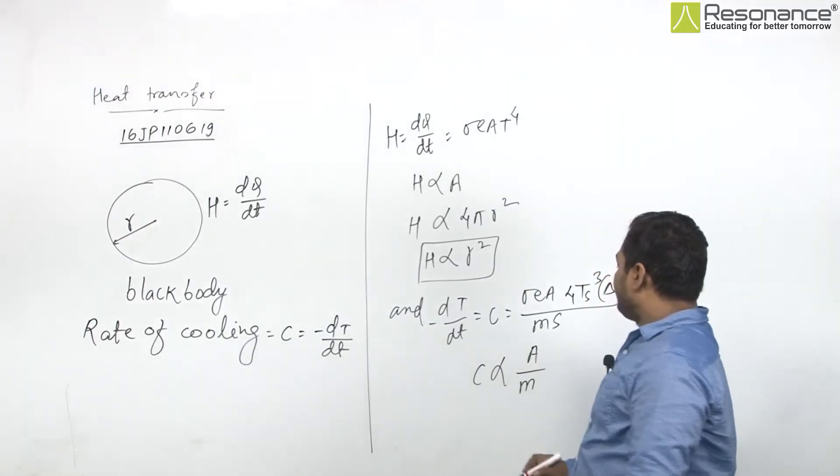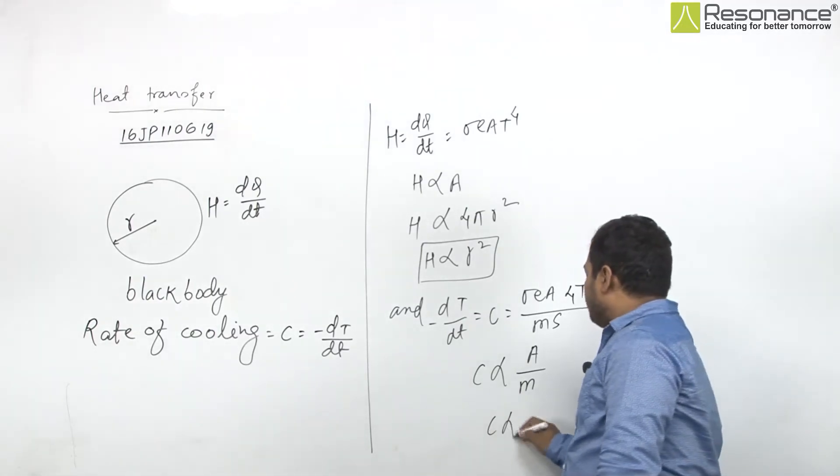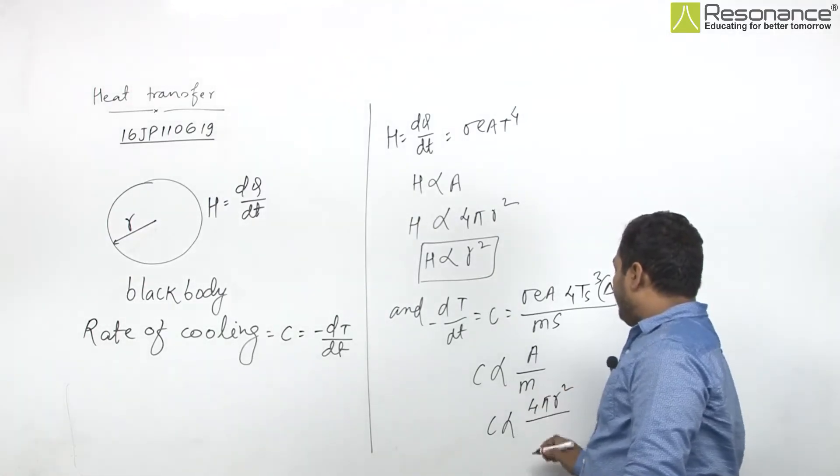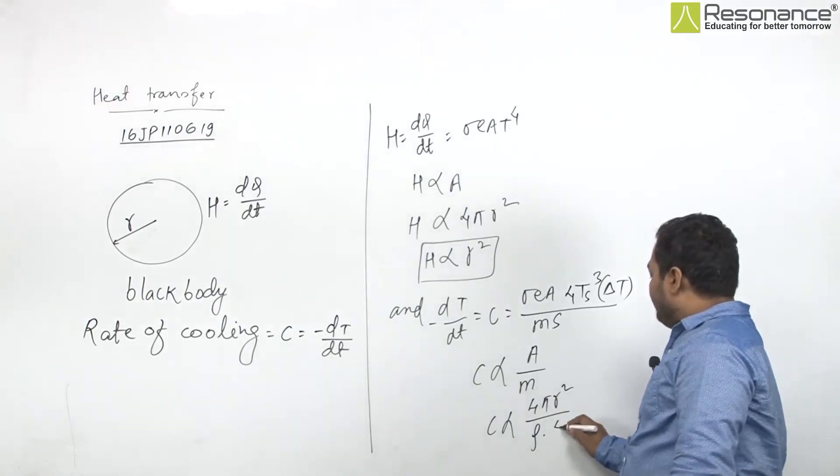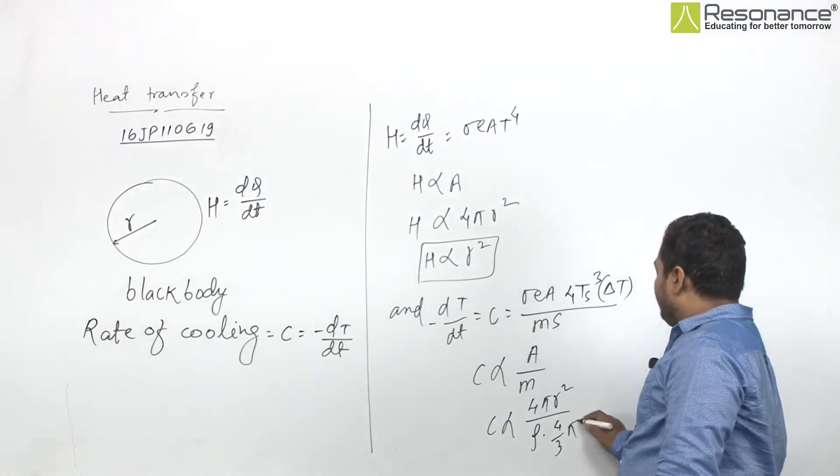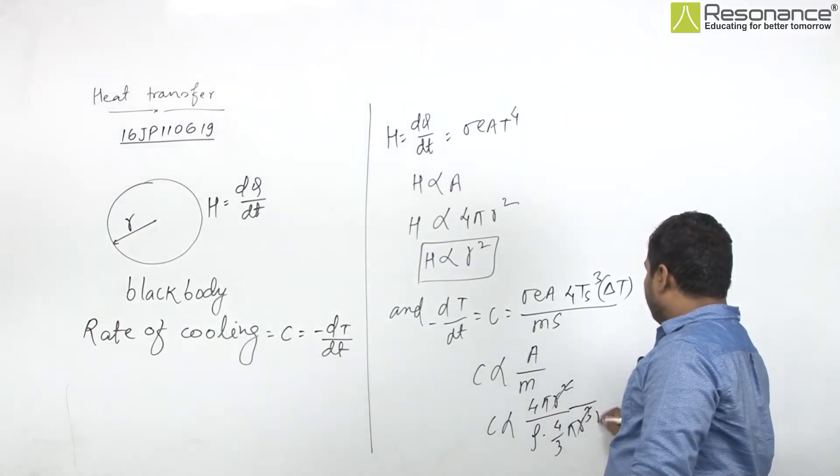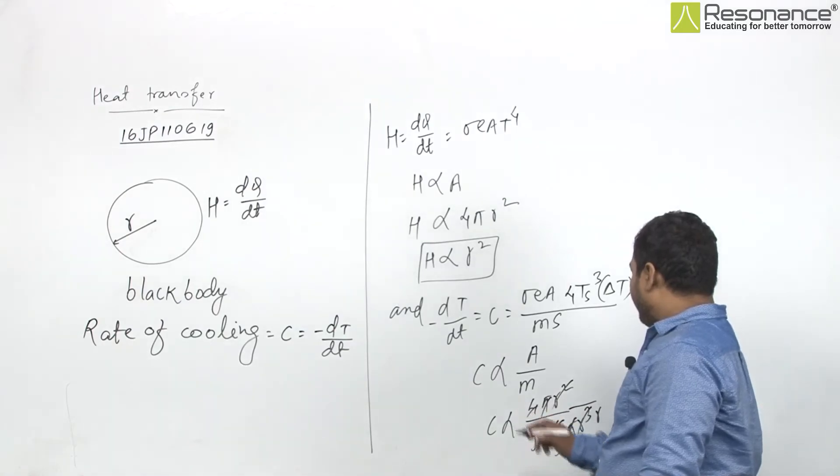So from here, C is proportional to A upon M. This M can be converted as: area is 4 pi R squared, and M is density rho multiplied with 4 by 3 pi R cubed.